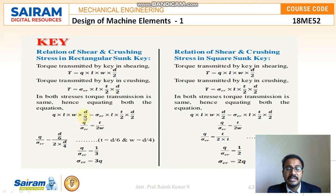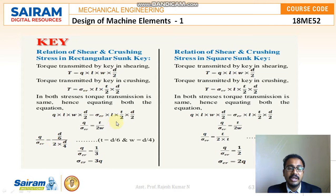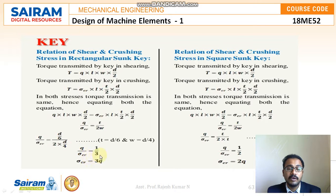Cancelling the common terms, we get τ / σ_cr = t / (2w). Substituting the standard values — t = d/6 and w = d/4 for the rectangular sunk key — we get τ / σ_cr = (d/6) / (2 × d/4). Cancelling d and the numbers gives τ / σ_cr = 1/3, so the crushing stress equals 3 times the shear stress.